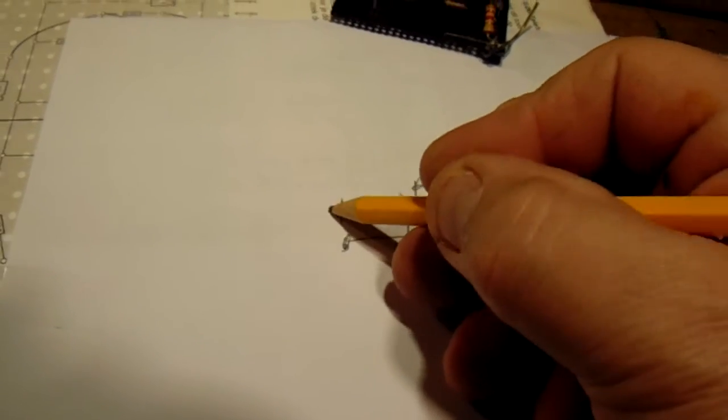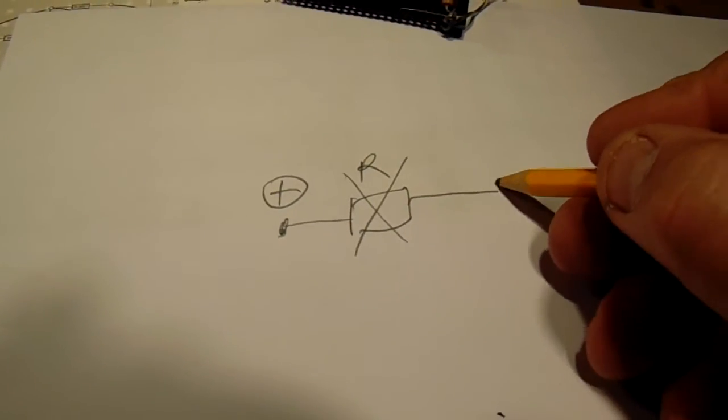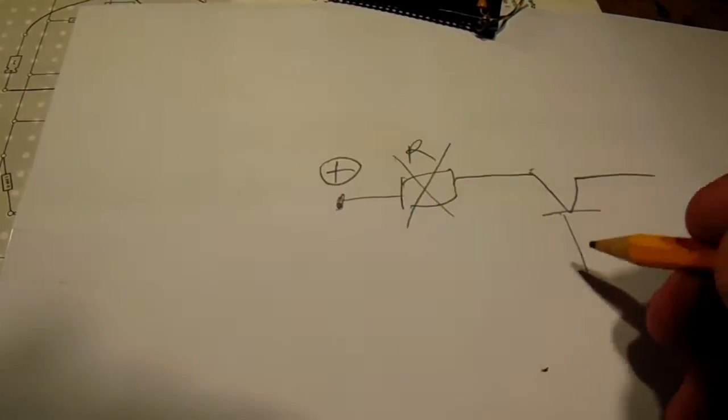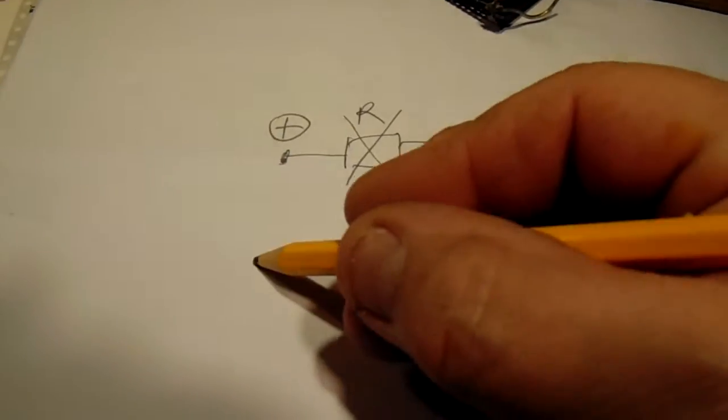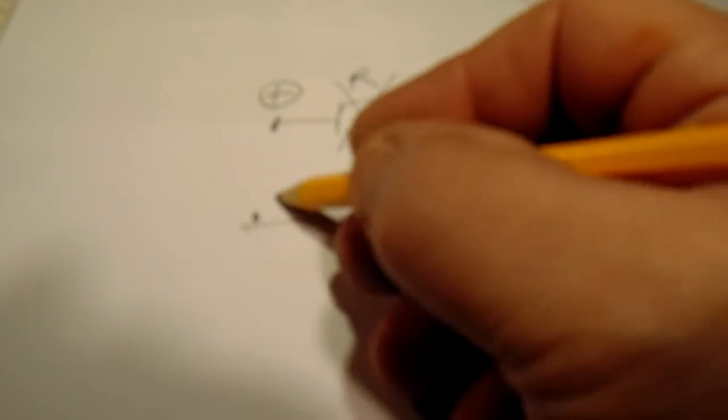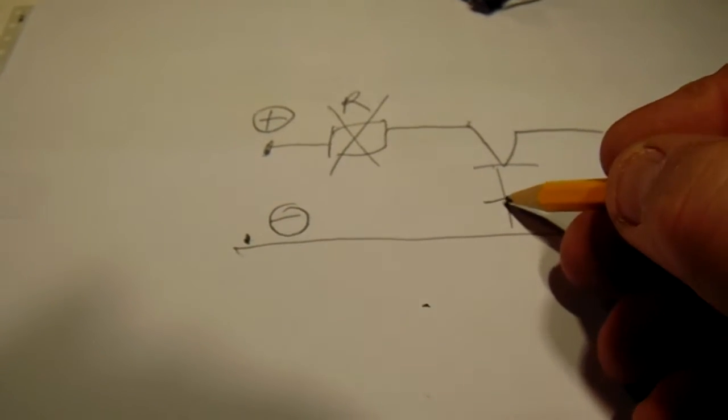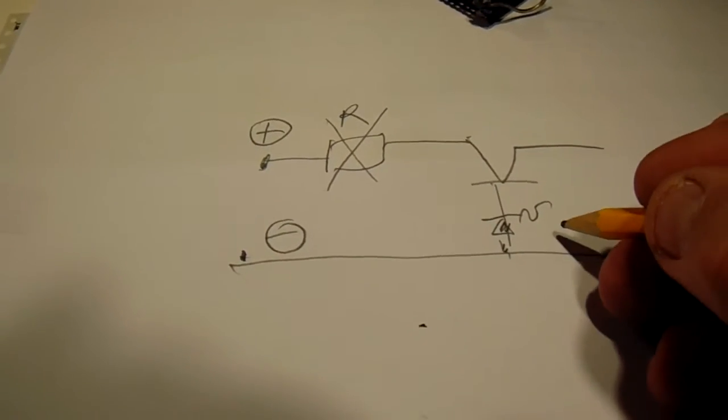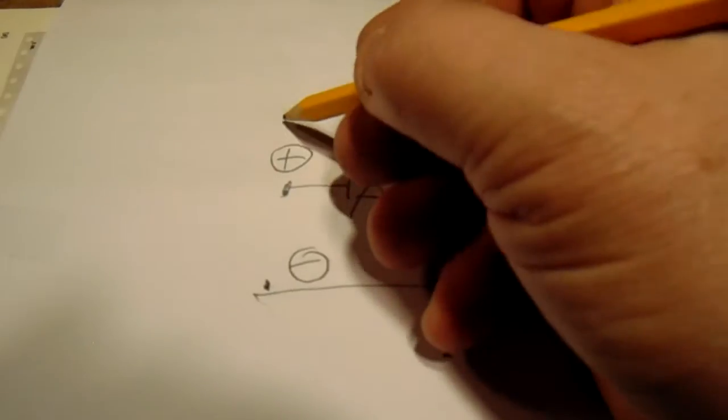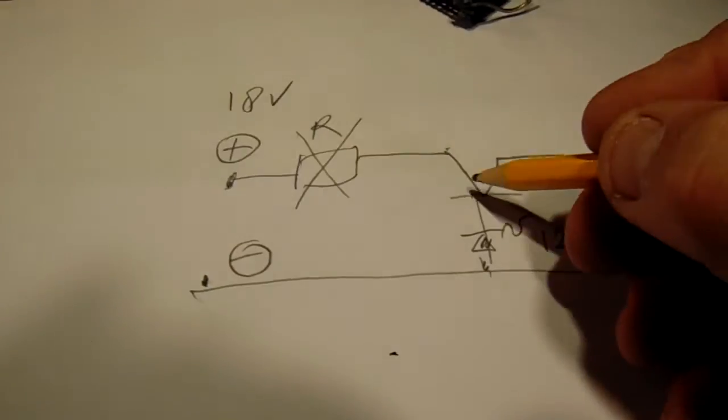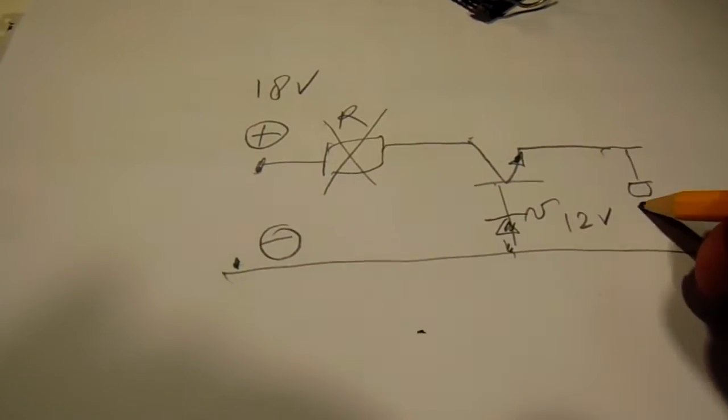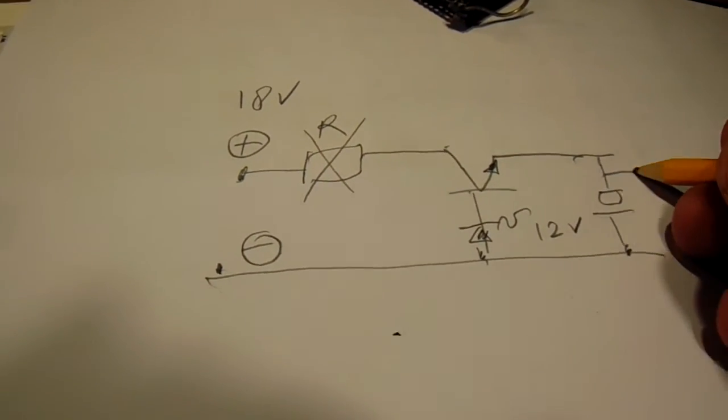Here the positive lead, here the transistor could be a BD139, and here the negative lead. And here a zener diode for from say 12 volt. Here 18 volts. Here the emitter, here a cap.